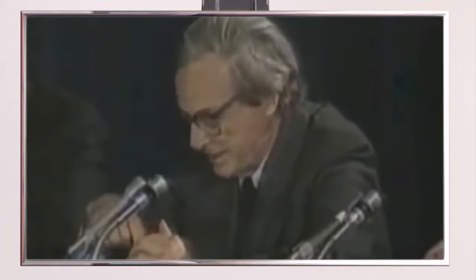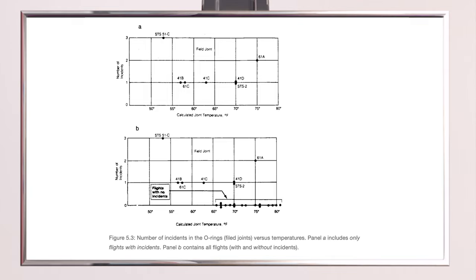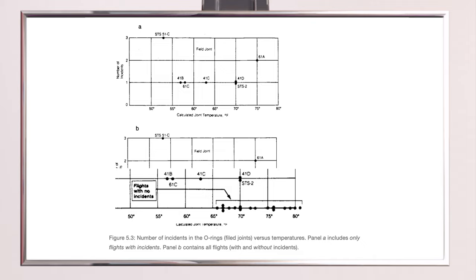The Rogers Commission investigated what happened and discovered a major flaw in the analysis of the rocket engineers: "There's no resilience in this particular material when it's at a temperature of 32 degrees." When observing the effects of temperature, they had excluded flights with zero incident from the analysis because they did not seem to bring any information about the effects of temperature. However, if the engineers had taken all the launches into account, they would have observed a clear negative dependence between temperature and number of incidents.